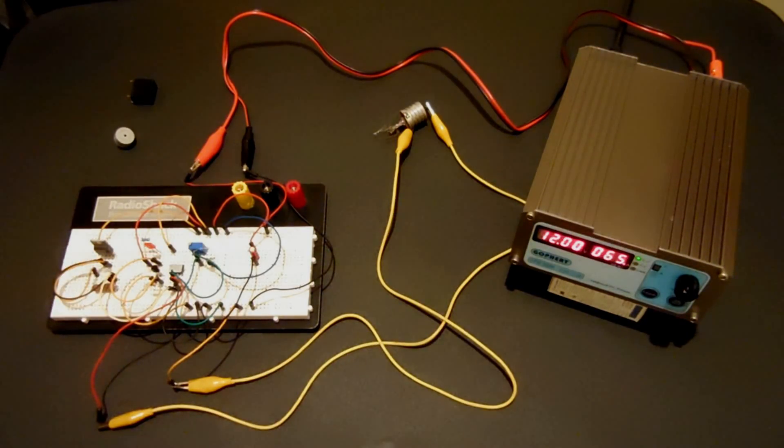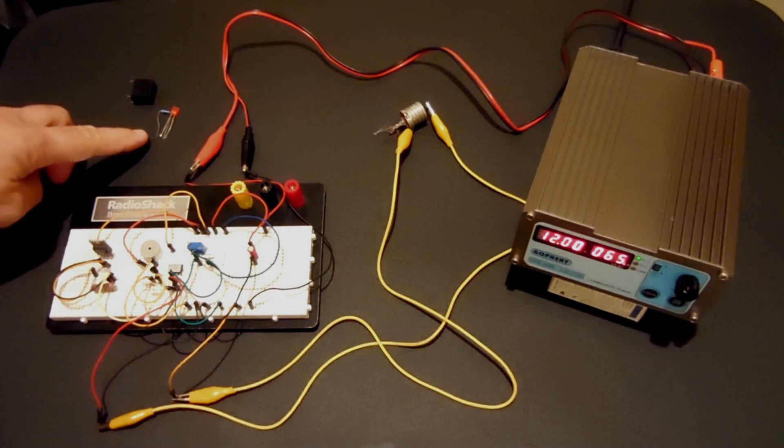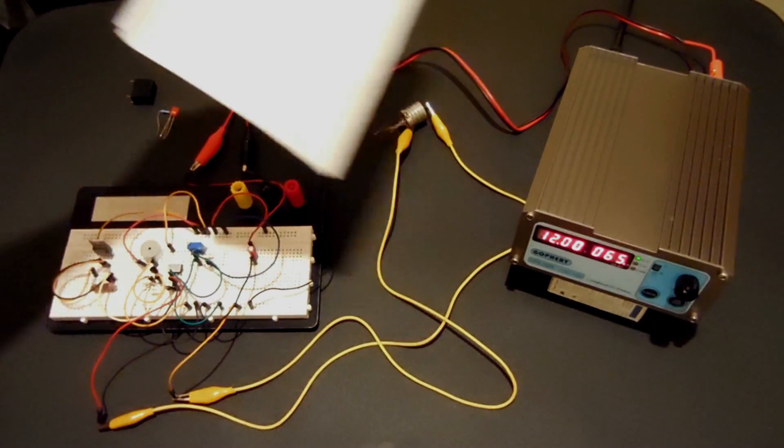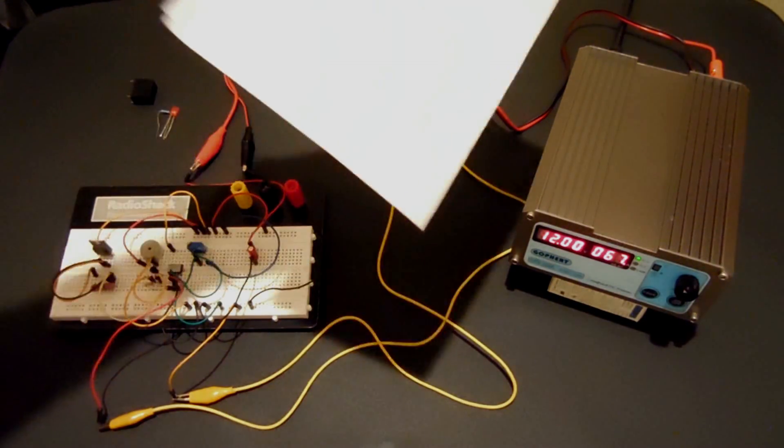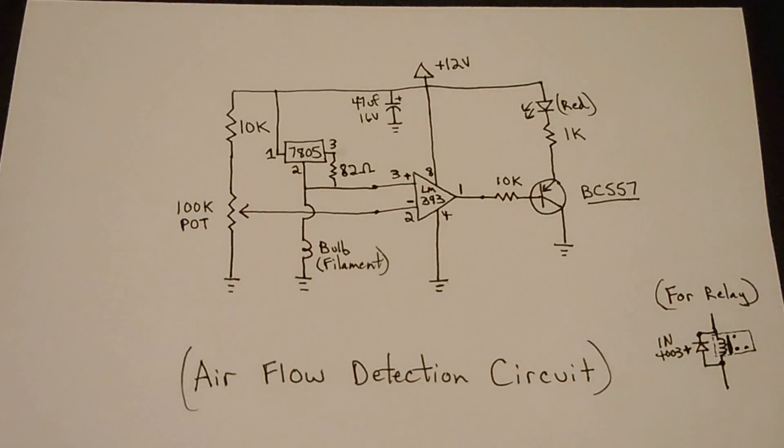Now I'm going to swap out the LED with the piezo buzzer. Okay, the current limiting resistor and LED has been swapped out with the piezo buzzer. Now I'm going to blow at the filament. Here we go. Once again with the paper, and that is it. Let me show you the schematic now.